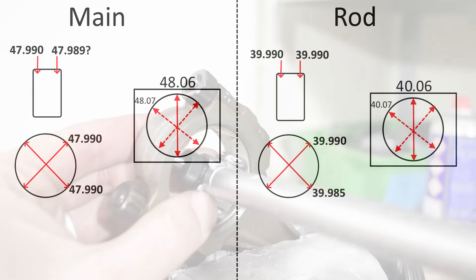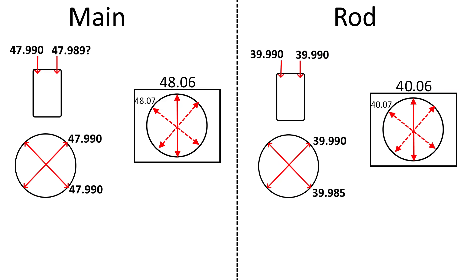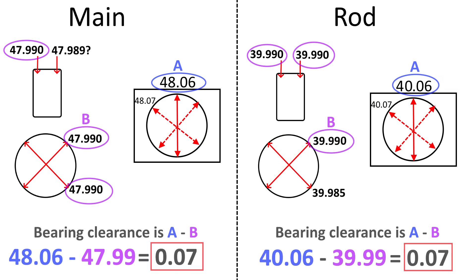And here we have all of our journal and our bearing bore measurements. To get our bearing clearance value we're going to deduct our vertical axis bearing bore measurement from our largest journal measurement. The result is our bearing clearance.